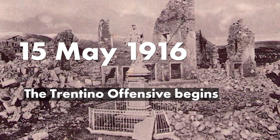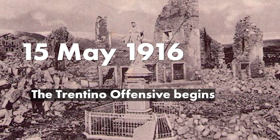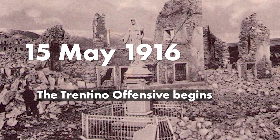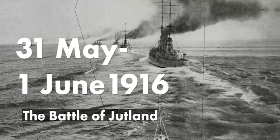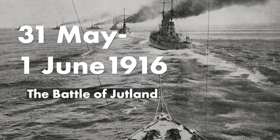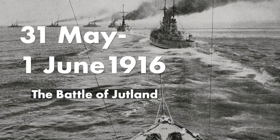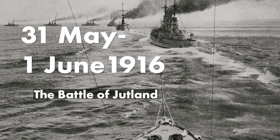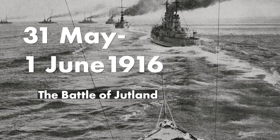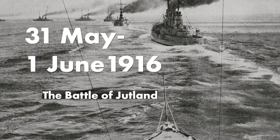On the 15th of May 1916, in an attempt to knock Italy out of the war in a single blow, Austro-Hungarian forces begin the Trentino offensive towards Italy's northern plain. On the 31st of May to the 1st of June, the Battle of Jutland. During the only large-scale naval battle of the war, German ships attempt to break free from a British naval blockade of the North Sea. Although the battle itself is inconclusive, the German surface fleet remains confined to port, and the German navy turns its efforts to submarine warfare.